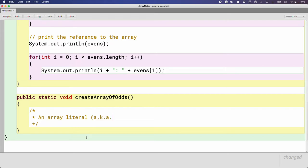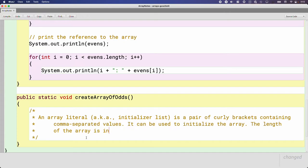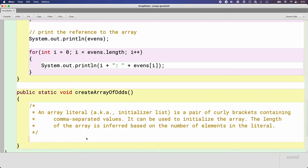We can use something called an array literal. This is also known as, aka, this is also known as an initializer list. You'll see that term used in the cs-awesome online text. So an array literal is a pair of curly brackets containing comma separated values. It can be used to initialize the array. It's really convenient. Another thing that makes it convenient is the length of the array. The length of the array is inferred. We don't have to explicitly state it. It's inferred based on the number of elements in the literal.